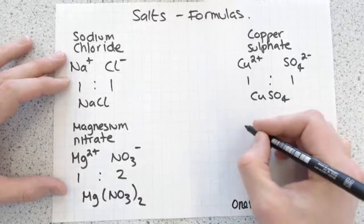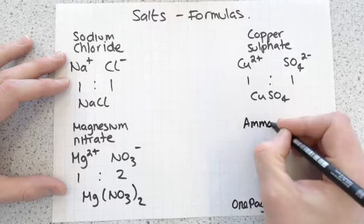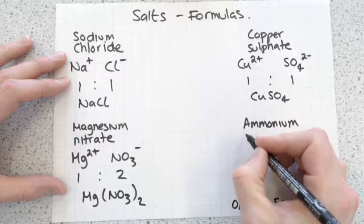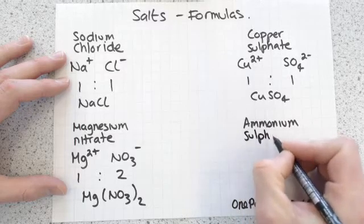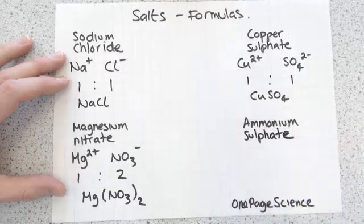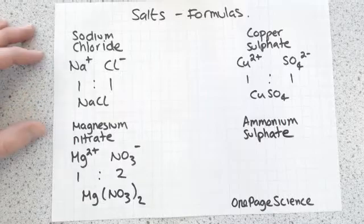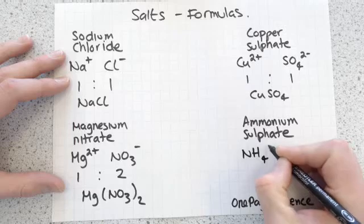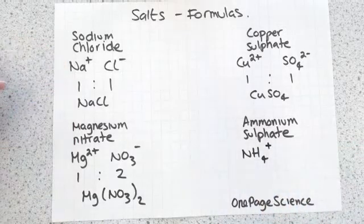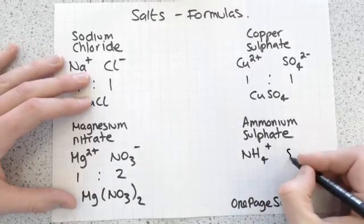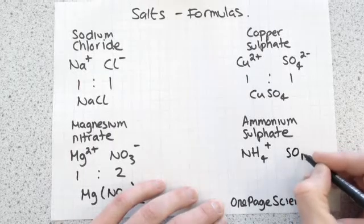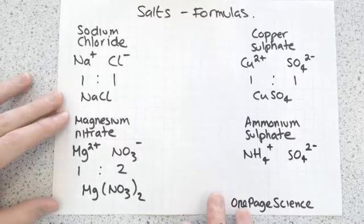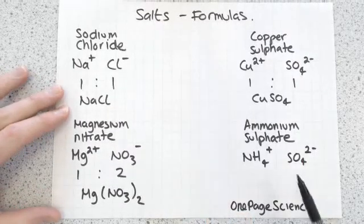Let's have a go at another one, let's try ammonium sulfate. Again, get your periodic table, you look up an ammonium which is NH4+, and sulfate is SO4 2-.